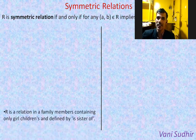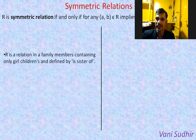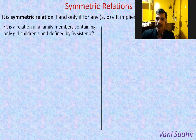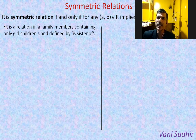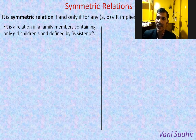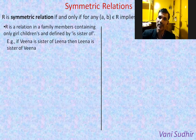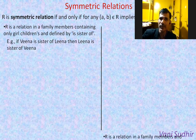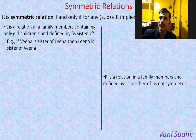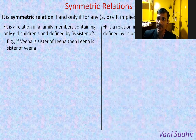We will give an illustration to understand it. Suppose in a family containing only girl children, we have a relation 'is sister of'. Then if Veena is sister of Lina, then Lina will also be sister of Veena. Therefore it is a symmetric relation.